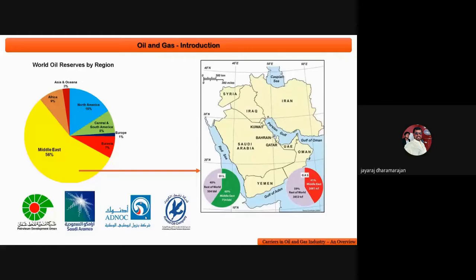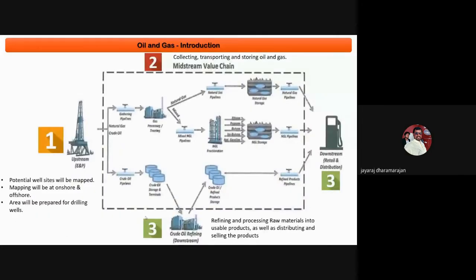These major companies produce crude oil and generate major engineering projects. They offload their projects to smaller service companies. The oil and gas field has three segments: upstream, midstream, and downstream.